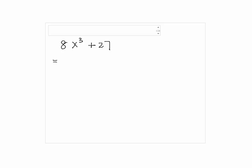Notice that 8x cubed is given by 2x to the third power, and 27 is written as 3 cubed.